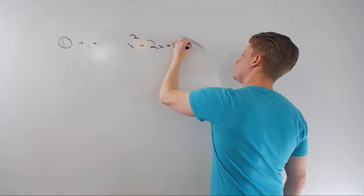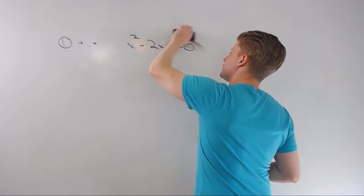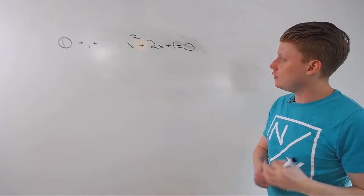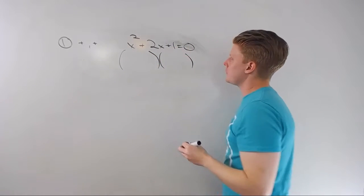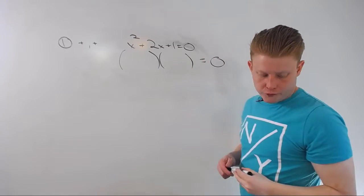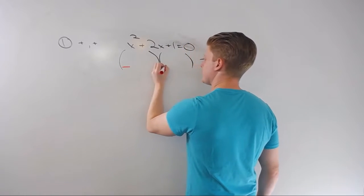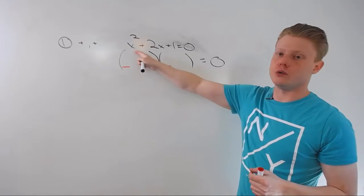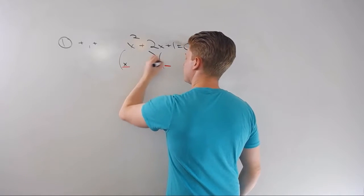We can factor this into two sets of parentheses. The way it works: first term times first term equals x squared, so that breaks down into x and x. Now skip the middle term for a moment and look at the last term — last term times last term equals 1.